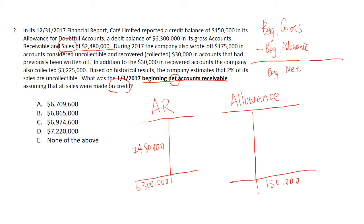The write-off for this year is $175,000, so we debit allowance and credit accounts receivable. For the recovery, we debit cash and credit allowance for $30,000. The company also collected $3,025,000 in cash, so we debit cash and credit accounts receivable.